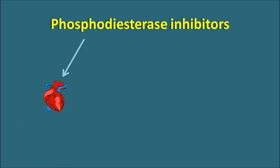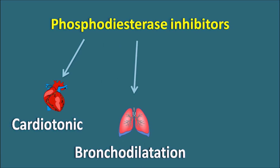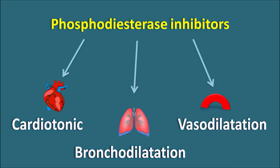these drugs can act on the heart as cardiotonics — they increase the force of contraction of the heart. They can also act on the lungs to produce bronchodilatation, making them useful in the treatment of asthma as well as COPD (chronic obstructive pulmonary disorder). These drugs can also act on the blood vessels to increase vasodilatation, as well as act on the platelets to decrease platelet aggregation.